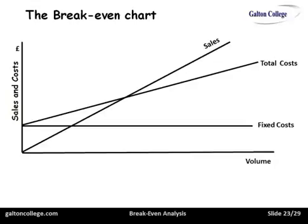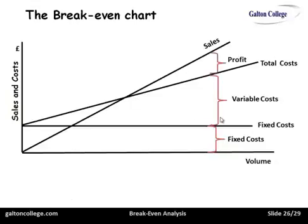This is our break-even chart — the one you'll see in most textbooks. We have our fixed costs, which are there irrespective of the volume of output. We have our variable costs: at this volume of output, that's the variable cost. If we had less output, the variable cost would be less — less raw materials used, less energy, less machine time, and so on. The difference between the fixed and variable cost and the sales revenue is the profit. At this point, there is no profit and no loss — it's the break-even point. This level of output is absolutely essential; the business must produce this much. If it doesn't, it will incur losses. If it produces more, the more it produces, the more profit it will make.